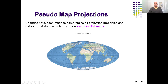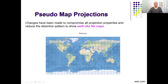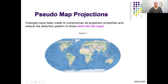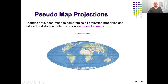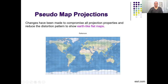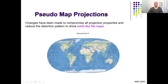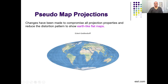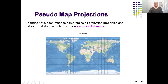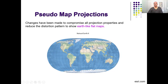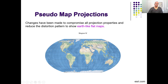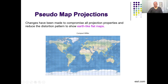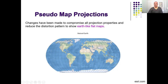There are also projections that compromise all projection properties in order to reduce the distortion pattern of all properties and show the Earth as a flat map. Those maps are not good for representing any one property specifically, but good for representing the Earth as a whole just for visualization. These map projections are called pseudo map projections.